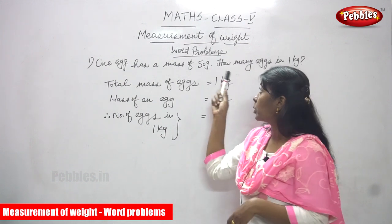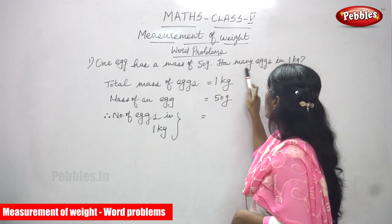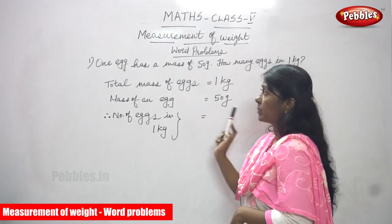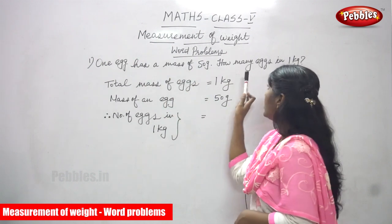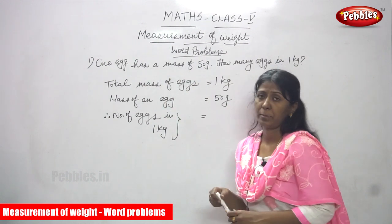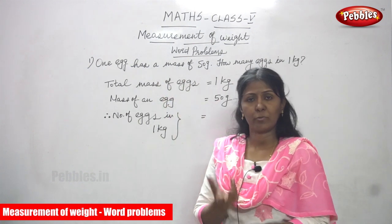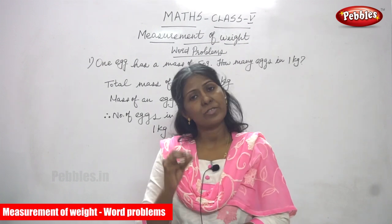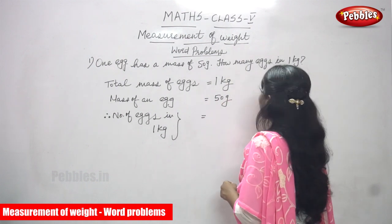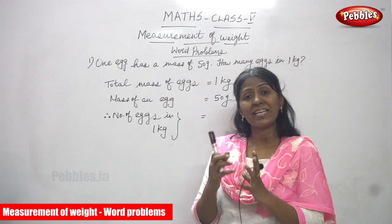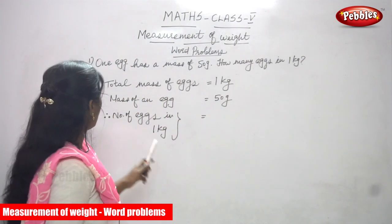Now we are going to start the word problem. One egg has a mass of 50 grams. How many eggs in one kilogram? The weight of an egg is 50 grams. They are asking: how many eggs in one kilogram — that is, the number of eggs in one kilogram.